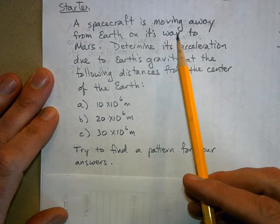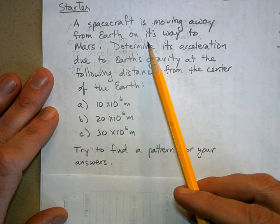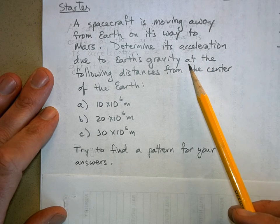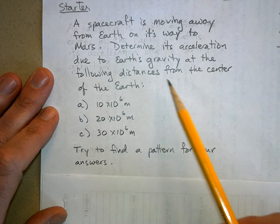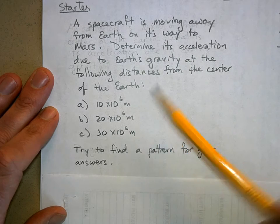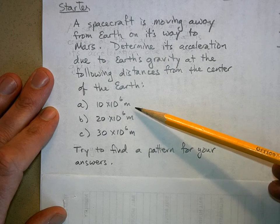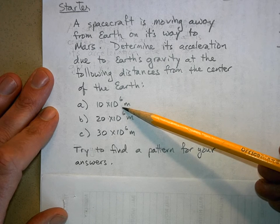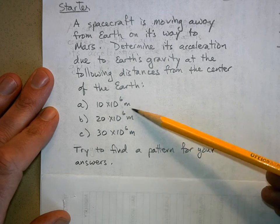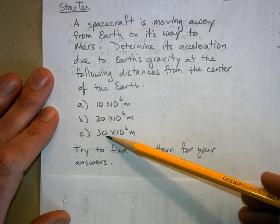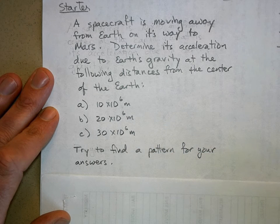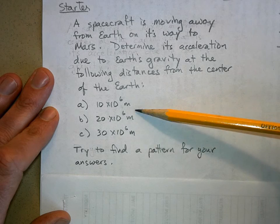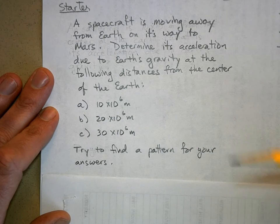Our problem is: a spacecraft is moving away from Earth on its way to Mars. Determine its acceleration due to Earth's gravity at the following distances from the center of the Earth: 10 million meters, 20 million meters, and 30 million meters away. Then we're going to look for a pattern between these answers and see what happens.